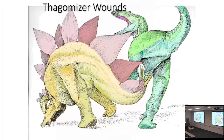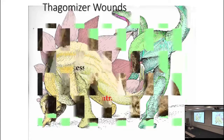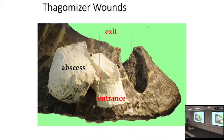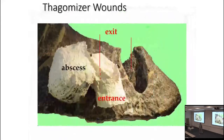There's also dinosaur-on-dinosaur damage — herbivore on carnivore. Stegosaurus is characterized by the thagomizer, the pair of tail spikes at the end. We have multiple bones, especially from the Morrison Formation — the Late Jurassic of Western North America — that seem to be thagomizer wounds. In this case, this is the pubis of an Allosaurus. The thagomizer apparently pierced through the pubis bone. The Allosaurus lived but probably wasn't happy about it — there's an abscess that formed as the wound was healing.